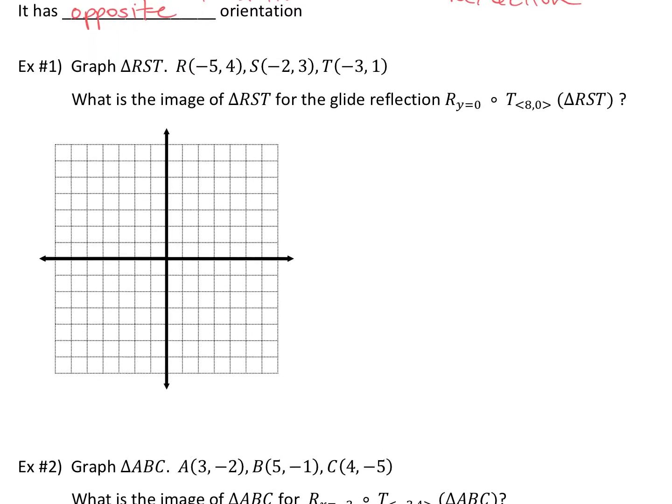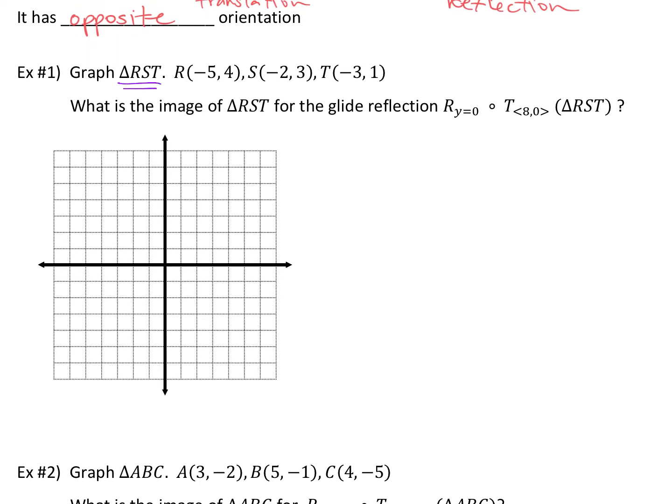So the first one we're going to do, it says graph triangle RST, and I always need to see your original triangle. So give me the original, the one you started with, and then do the glide reflection for me. So R is at negative five, one, two, three, four, five, one, two, three, four. So here's R. S is at negative two, one, two, three. So here's S. T is at negative three, one. So this is your starting triangle. So I did that in purple.